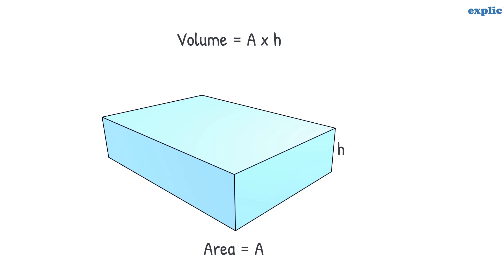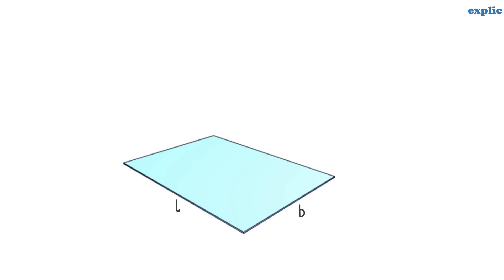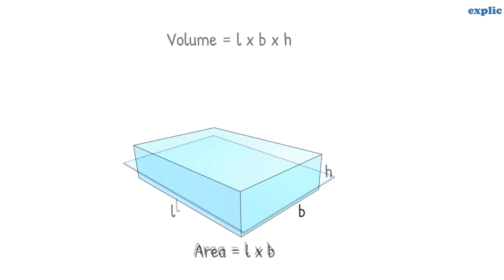The volume of the pile would be area a multiplied by height h. If the length and breadth of the paper is l and b, the area would be l multiplied by b. Hence, the volume of the pile or cuboid is lbh, which is same as we learned earlier.